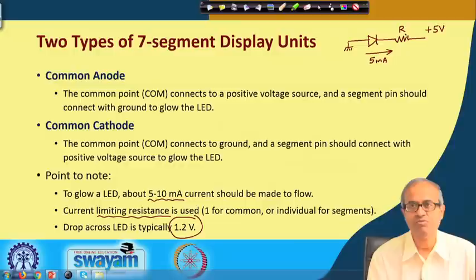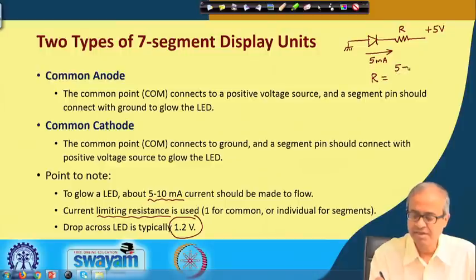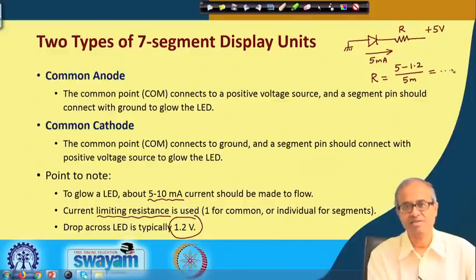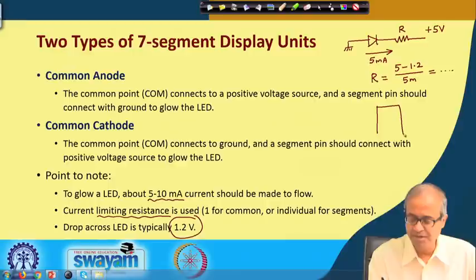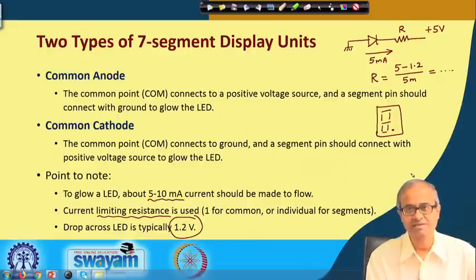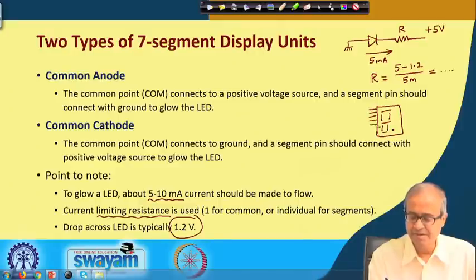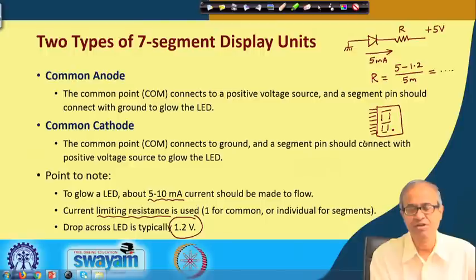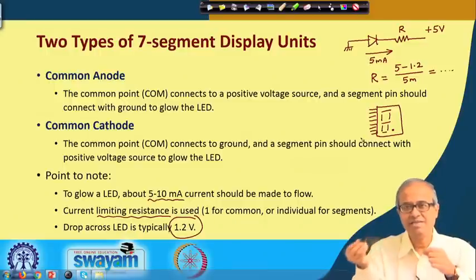If we connect 5 volts on one side and ground on the other, and want 5 milliamperes to pass through the LED, the resistance value is calculated as: R = (5V − 1.2V) / 5mA, where 1.2V is the forward voltage drop across the LED. This gives us the required current-limiting resistance value.